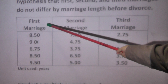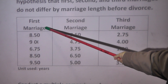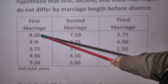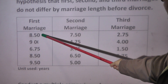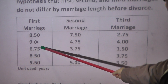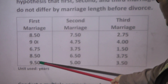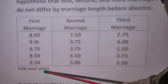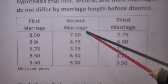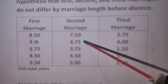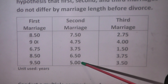This is the dataset. First marriage — for five couples, the duration of their marriage in years: 8.5, 9, 6.75, 8.5, and 9.5. Second marriage: 7.5, 4.75, 3.75, 6.50, and 5 years.